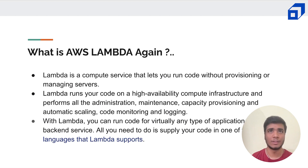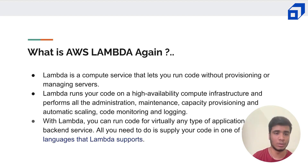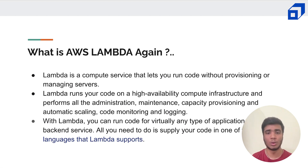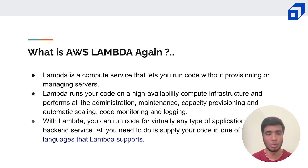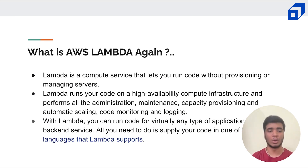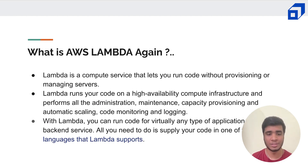Tying this together into a simpler definition: AWS Lambda is basically a compute service that lets you run your code without managing or provisioning servers. You can upload your code and it will run on demand. Lambda is highly available and you will only be billed for the duration at which your code runs.